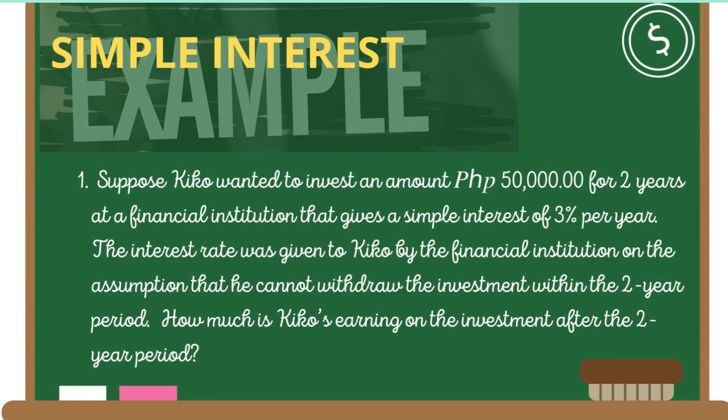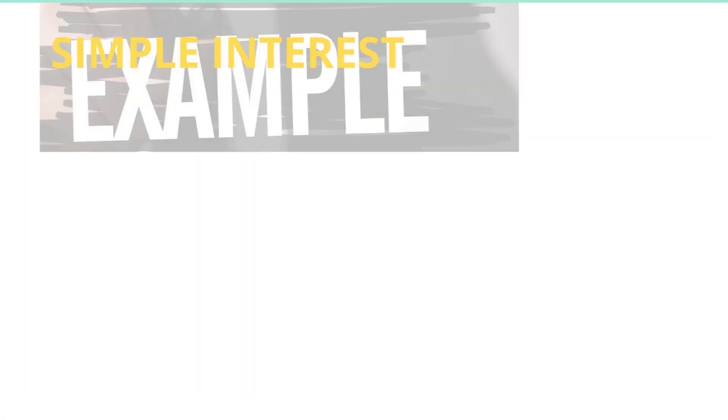Now let's go to an example. Suppose Kiko wanted to invest an amount of 50,000 for two years at a financial institution that gives a simple interest of three percent per year. The interest rate was given to Kiko by the financial institution on the assumption that he cannot withdraw the investment within the two-year period. How much is Kiko's earning on the investment after the two-year period?